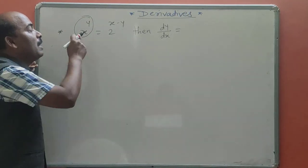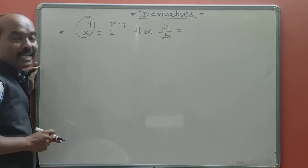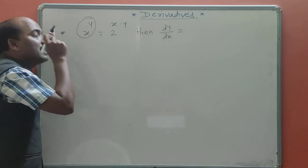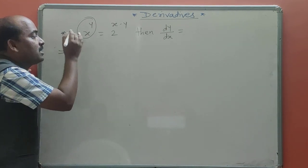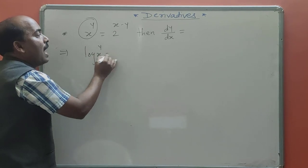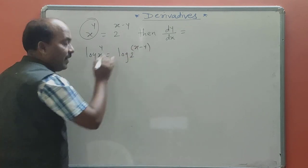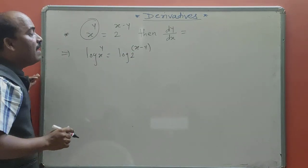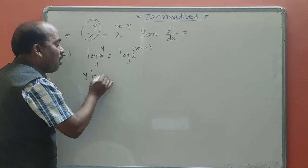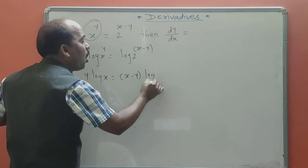We know that from the previous type, if the function is f(x) raised to g(x), the process is taking log on both sides. Here also, applying the same process: log of x raised to y equals log of 2 raised to (x minus y). Next, using the power law, simplification gives y·log x = (x minus y)·log 2.